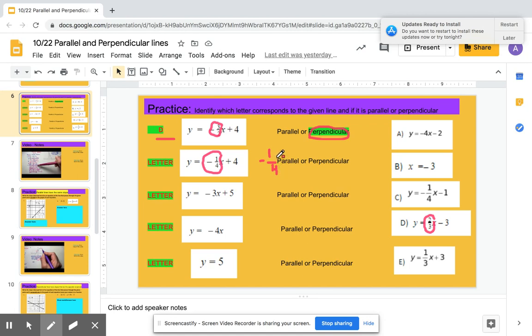Or perpendicular is the opposite reciprocal. So the opposite reciprocal, I would change the sign. It would be positive. And I would flip this fraction, 4 over 1. So my perpendicular slope should be a positive 4. Well, positive 4 and negative 4 are not the same. So letter A doesn't correspond with this.